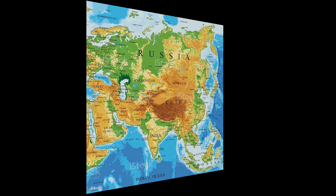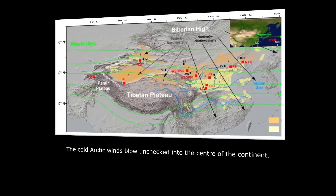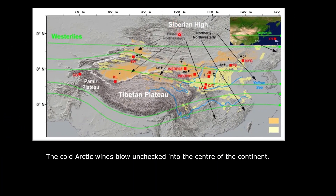On the other hand, the cold Arctic winds blow unchecked into the central part of the continent. During the winters, the Arctic region becomes very cold and becomes a region of high pressure. Winds begin to radiate out from the Arctic or Siberian regions and move unchecked into the central part of Asia.